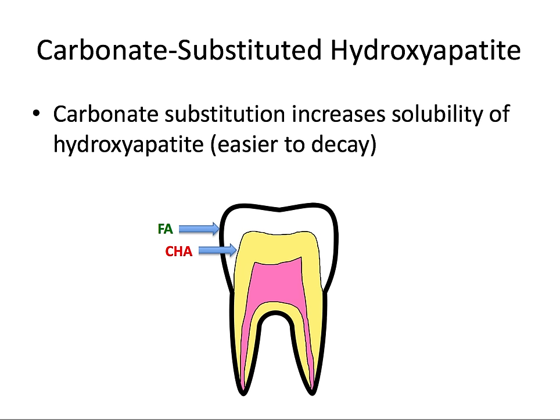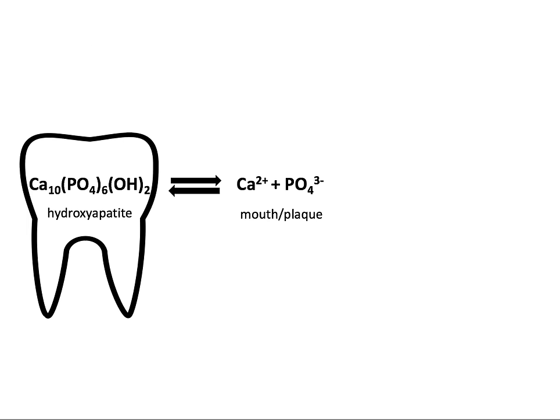Carbonate substitution increases the solubility of hydroxyapatite, and enamel is structurally and compositionally different from site to site. Near the dentin-enamel junction, enamel tends to have more carbonate substitution, making it more soluble. But near the outside, it tends to be more fluoride-substituted — fluorapatite — where fluoride bathes the tooth via fluoridated water, mouth rinse, and toothpaste. Importantly, the deeper a cavity penetrates into the tooth, the more soluble that enamel will be because of increased carbonate substitution.